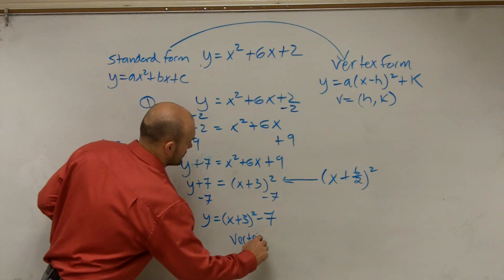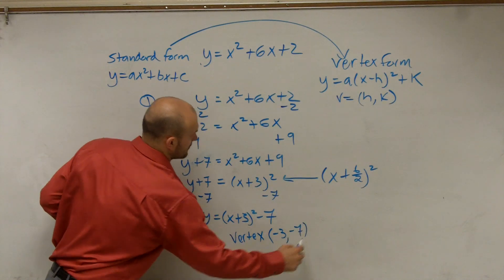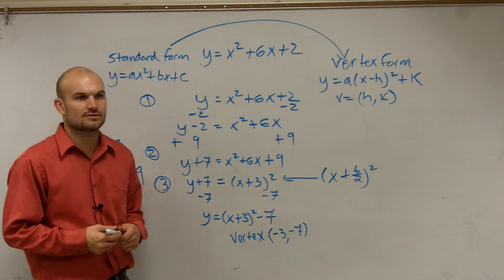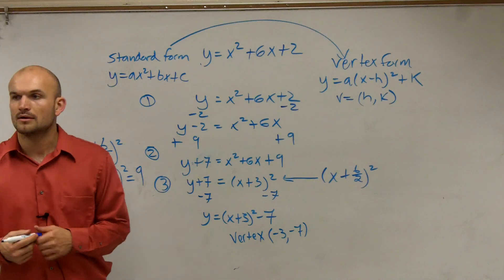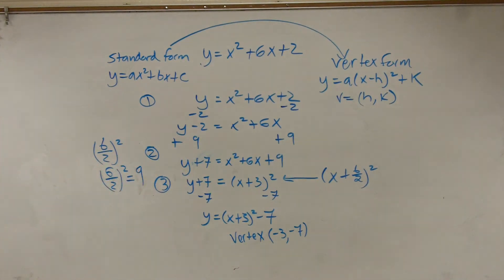3 negative 7. Make sure you do the opposite. Yeah. Opposite of h over k. So it's negative 3, negative 7. And that's it. That's all you guys got to do. Okay? That's it.